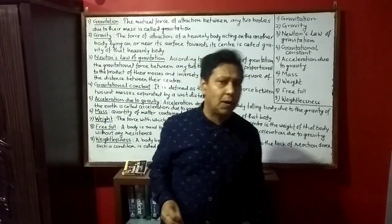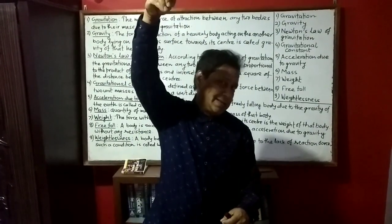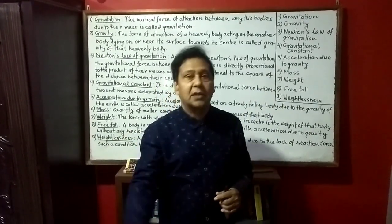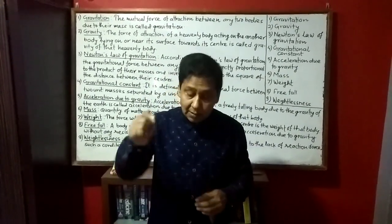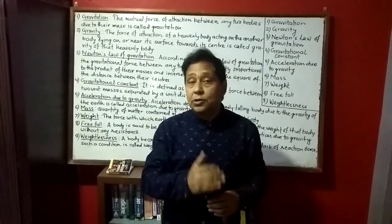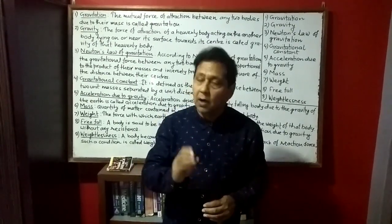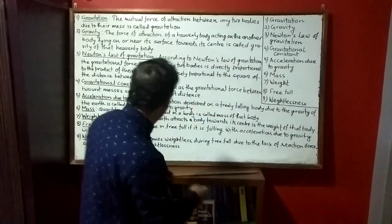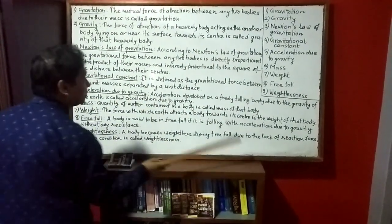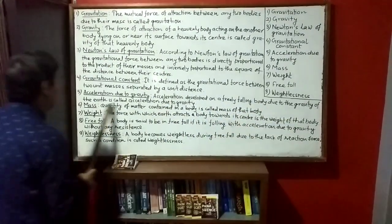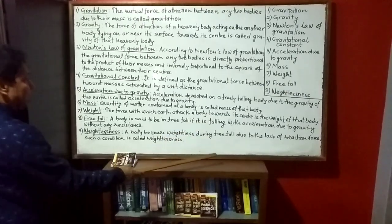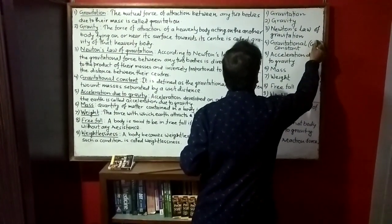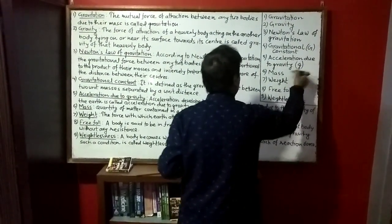Now next, let's talk about acceleration due to gravity. When a body is dropped from a certain height, every second its velocity goes on increasing — it means acceleration is produced on that body, and this is acceleration due to gravity. Acceleration developed on a freely falling body due to the gravity of the Earth is called acceleration due to gravity. It is denoted by small g. Note: gravitational constant is denoted by capital G, but acceleration due to gravity is denoted by small g.